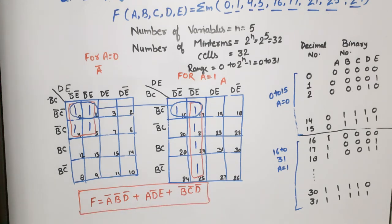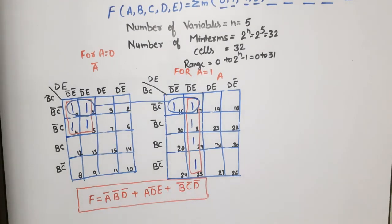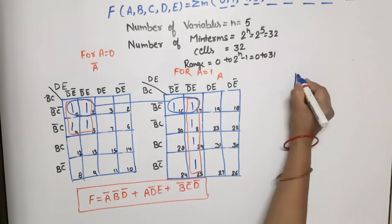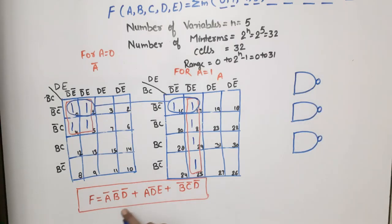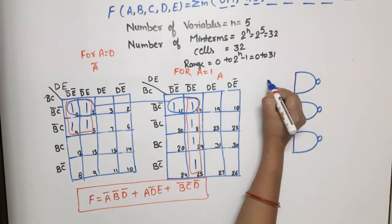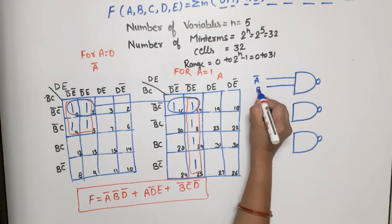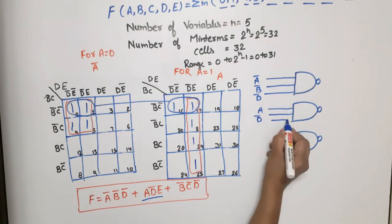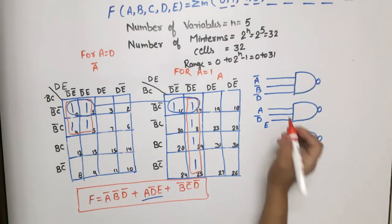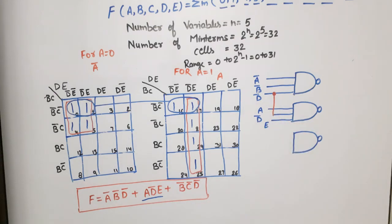Now I will also show how to implement this using NAND gates only. NAND-NAND implementation has already been discussed in previous videos. Here we have three product terms, so we take three NAND gates at the first level, and one NAND gate at the output. Each bubble represents inversion. For the first term A-bar·B-bar·D-bar: apply through NOT gates or directly. For A·D-bar·E: show individually or connect D-bar. For B-bar·C-bar·D-bar: similarly.